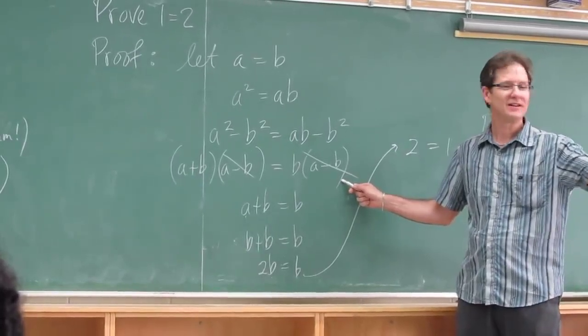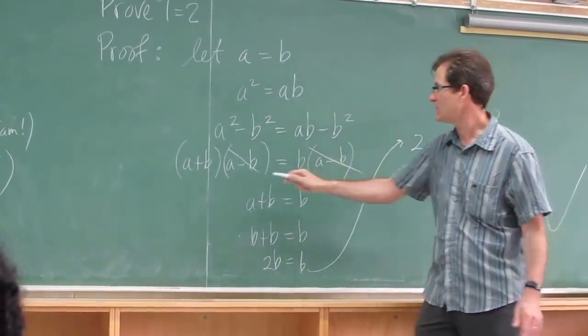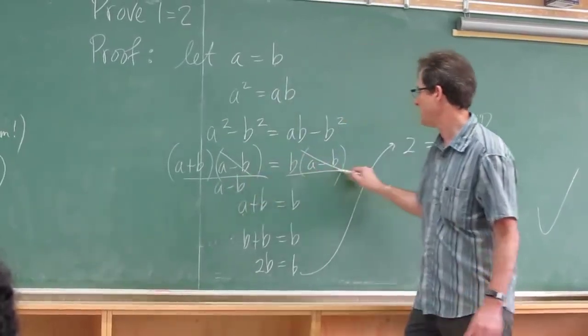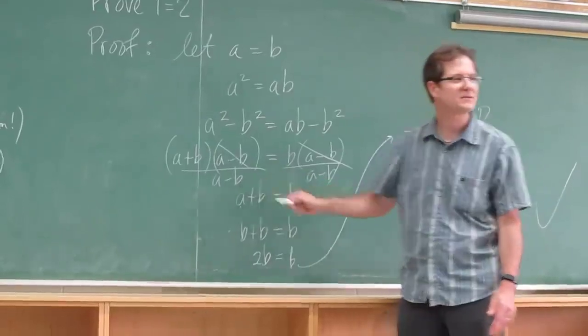Alright, you're on the right track. It's not that they can't be 0. They can't be the same number. Because if they're the same number, well, they can be the same number, but then you can't divide by a minus b. That's what I'm really doing when I cancel, because a minus b equals 0.